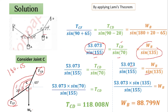In this way we can find the weight of bucket B, which is 88.799 Newton. If you want the answer in kilograms, divide this value by 9.81. If you follow Lamy's theorem to solve this kind of numerical problem, it will take only a few minutes and you can utilize the remaining time to solve complex problems in your final exam. I hope you find this video helpful — please like, share, and subscribe to our channel. Thank you.